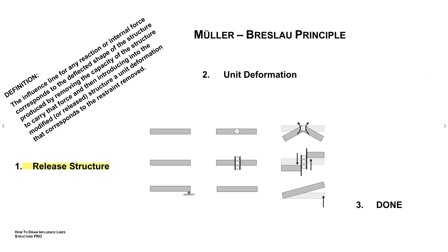Alright, the first step, we're going to do what's called release the structure, okay? So if we're interested in moment at a certain spot, then what we're going to do is we're going to introduce a hinge at that location. So we're actually taking away the ability of the beam or whatever it is to resist moment.